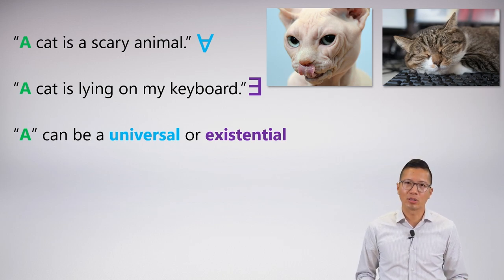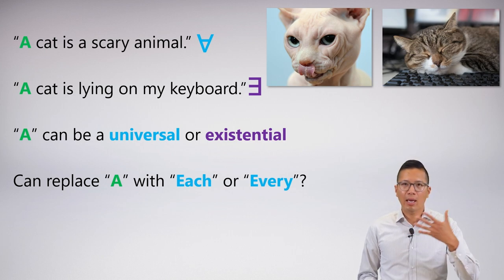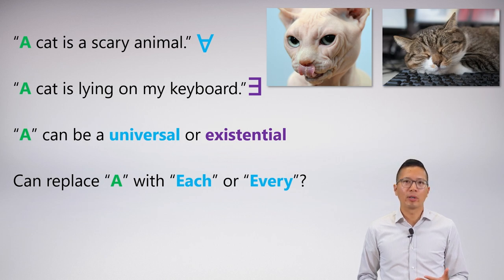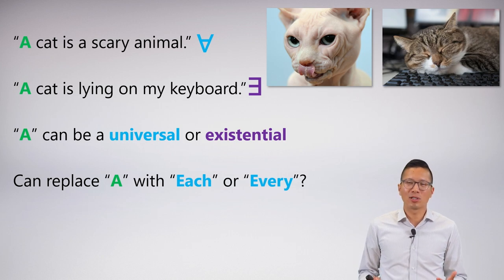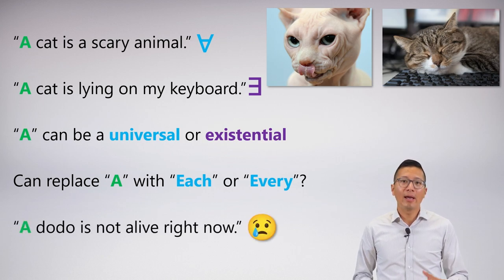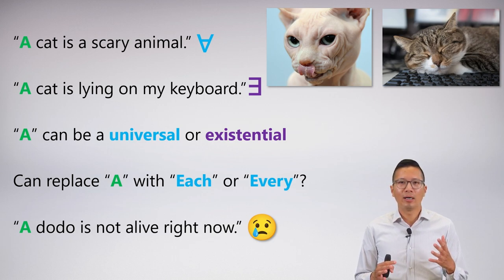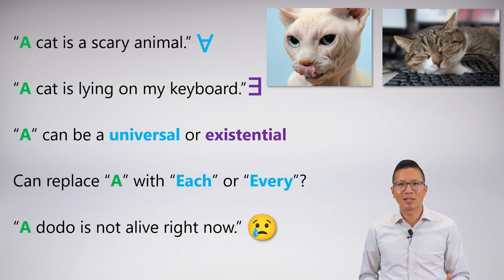One way to tell the difference is to ask: can I replace the word 'a' with 'each' or 'every'? If I can, then it's some sort of universal claim. 'Every cat is a scary animal' — that seems to work. But 'every cat is lying on my keyboard' — that's not what I mean. This requires contextual knowledge, so I find it a problematic example. You can also come up with a sentence with no clear answer: 'a dodo is not alive right now' — this seems possibly universal, possibly existential. It's a bit ambiguous.